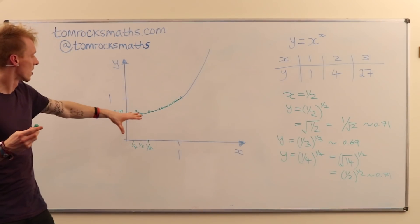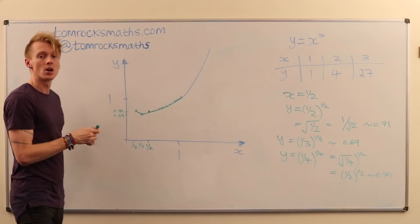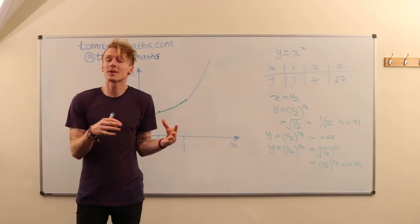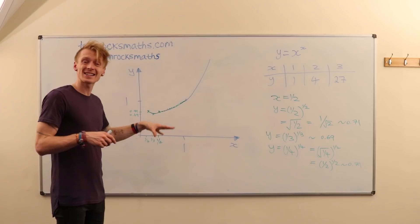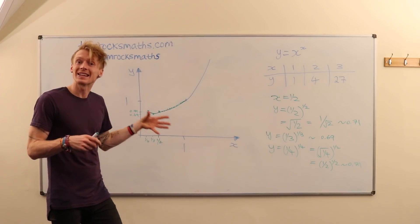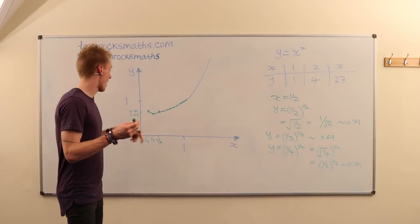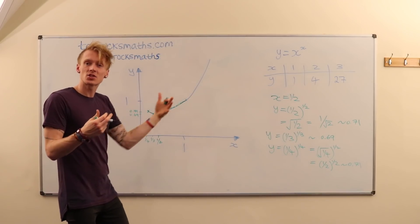And then the question is, what's actually happening as x gets smaller and smaller? So what's happening between a quarter and 0? Doing some calculations for numbers less than 1/4, we see that the value of x to the power x actually begins to increase. So at x equals 1/4, we are at 0.71 about for y.